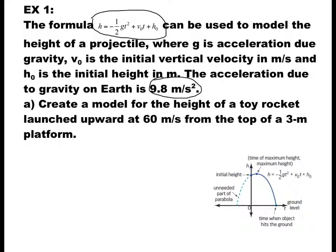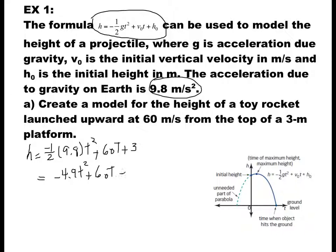Part a asks us to create a model for the height of a toy rocket launched upward at 60 meters per second from the top of a 3-meter platform. Using the same formula, h equals negative one-half times 9.8 t squared plus 60t plus 3. If you simplify, you get h equals negative 4.9t squared plus 60t plus 3.